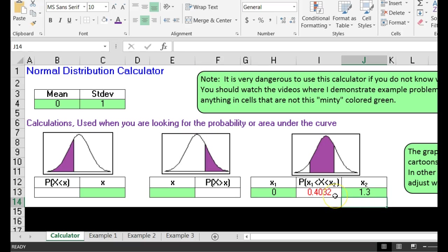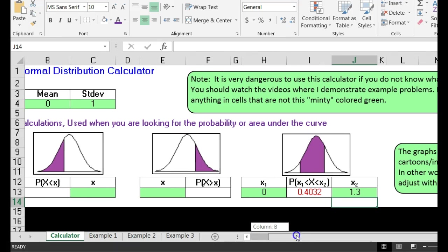Bazinga! The area between a z-score of zero and a z-score of 1.3, or the probability, is .4032. Now these little cartoons, they do not change. They are just images.